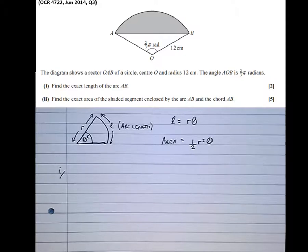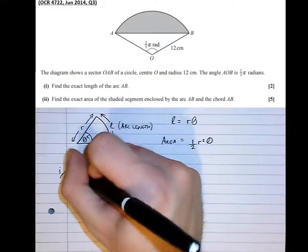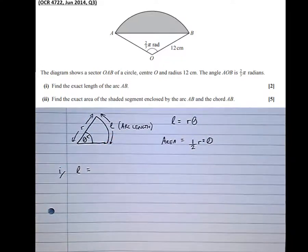So it says, find the exact length of the arc AB. Well, looking at the question, we can see that the radius is 12, and the angle is 2 thirds pi radians.